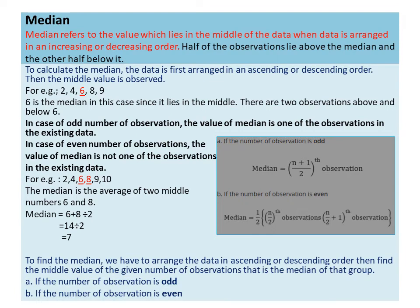If there are an even number of observations, the two middlemost observations are the (n ÷ 2)th and (n ÷ 2 + 1)th observations. For example, with 20 observations, the middlemost are the 10th and 11th observations. In such a case, we find the median by taking the average of the 10th and 11th observations.